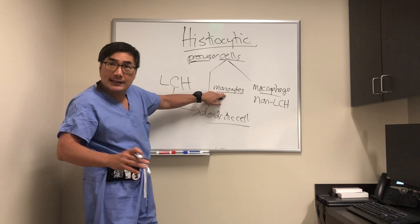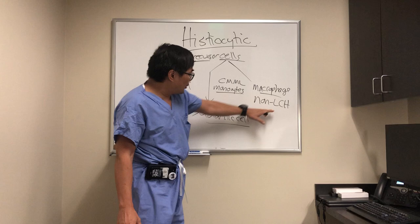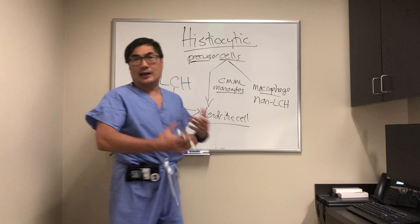Monocytes can also give rise to leukemias and malignancies — that's chronic myelomonocytic leukemia. You should look at the videos on leukemias for those, as well as anemic retinopathy in those patients. Today we're going to concentrate on the Langerhans type and the non-Langerhans type and how they come to neuroradiology.